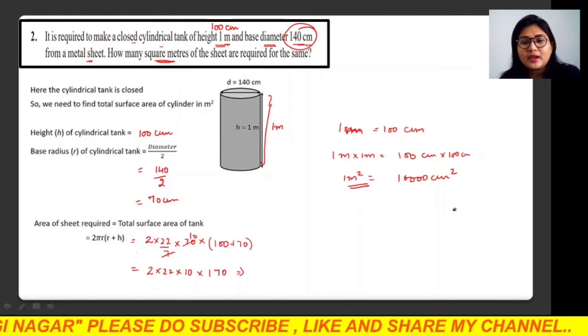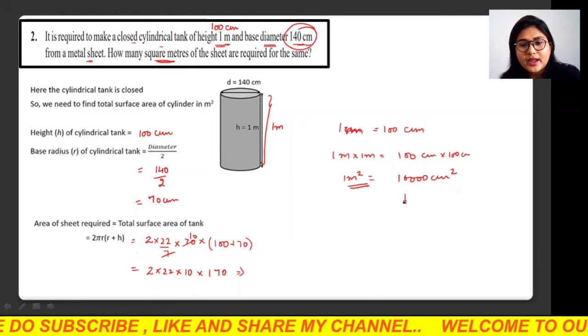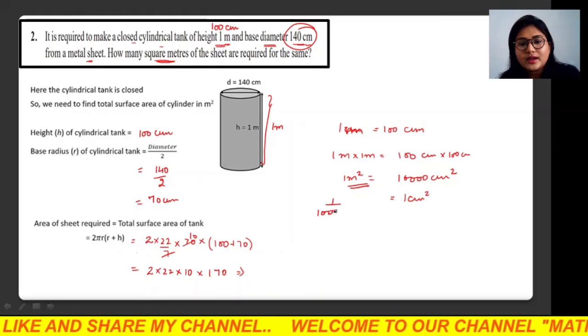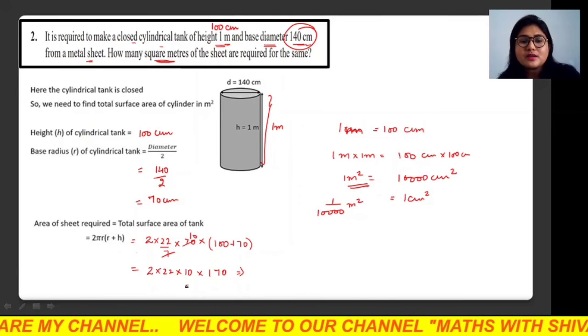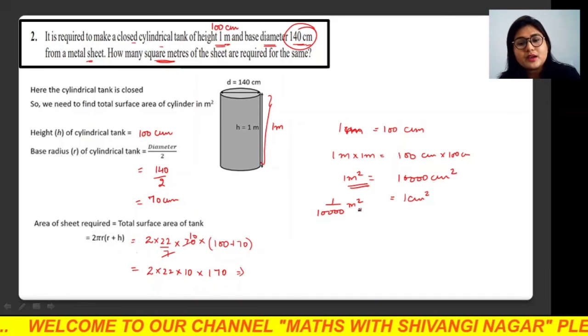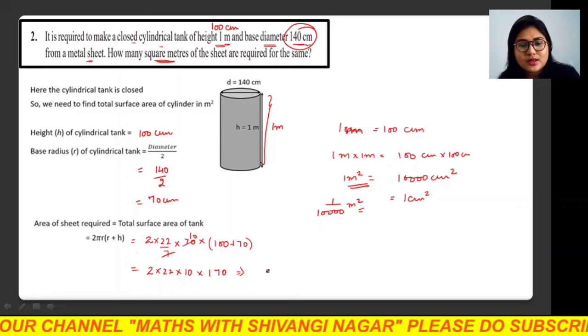That means if we have to convert 1 centimeter square to meter square, 1 centimeter square equals 1/10,000 meter square. So the entire data coming in centimeter square, if we want it in meter square, we have to divide the entire data by 10,000.